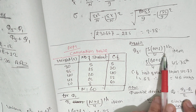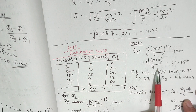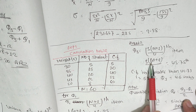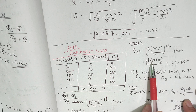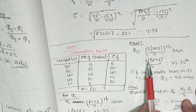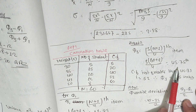For Q3: the formula is 3 into (n plus 1) divided by 4th item, which is 3 into (60 plus 1) divided by 4, giving the 45.75th item.